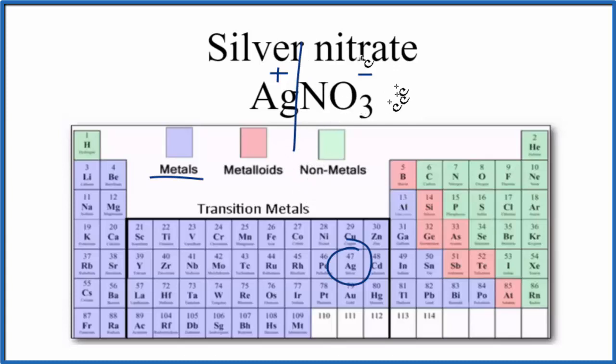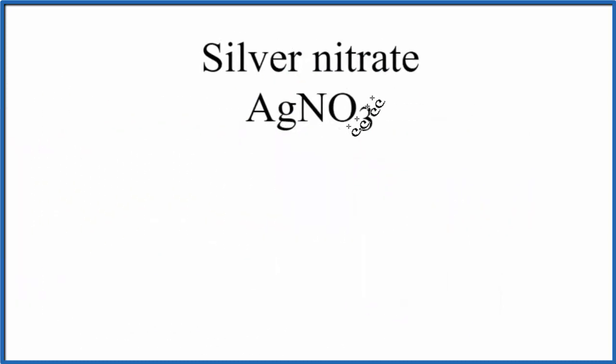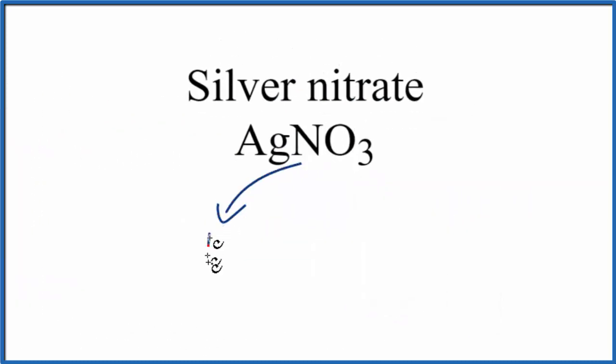So silver nitrate, the compound here, that's an ionic compound. Let's talk a little bit, though, about the nitrate ion. So for the nitrate ion, we said nitrogen, that is a non-metal. And then oxygen, that's also a non-metal. Non-metal plus non-metal, that gives us covalent bonds. We also call this molecular.